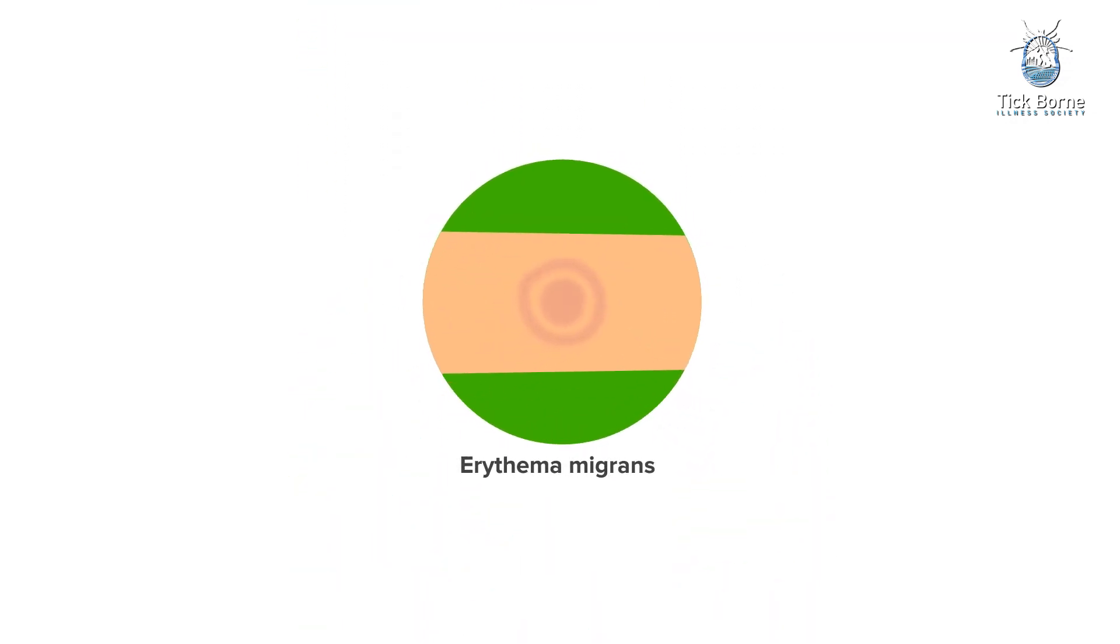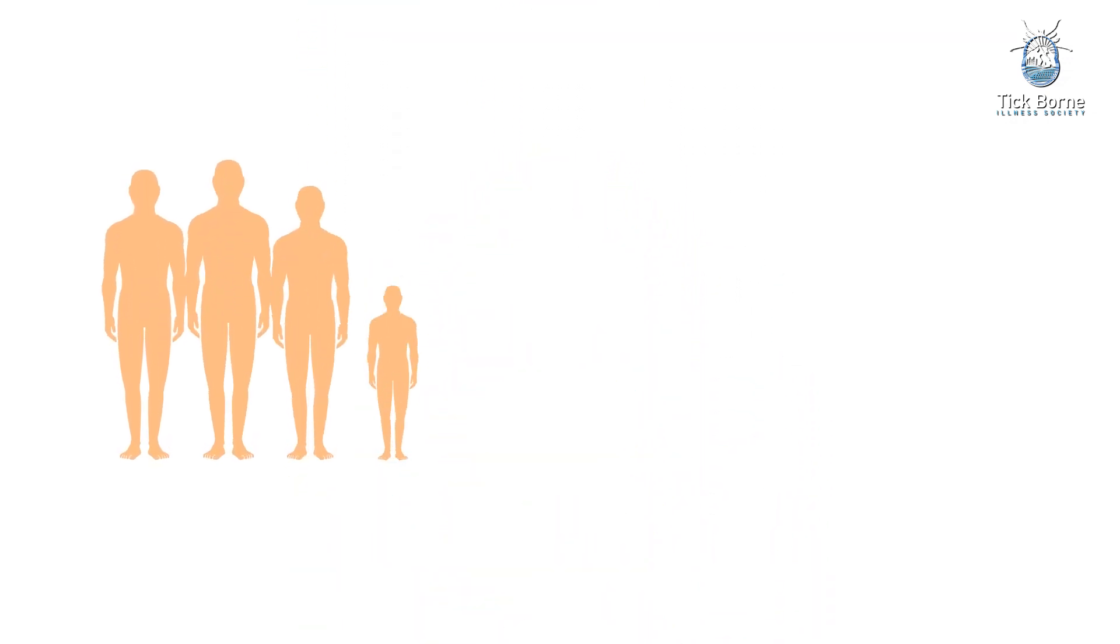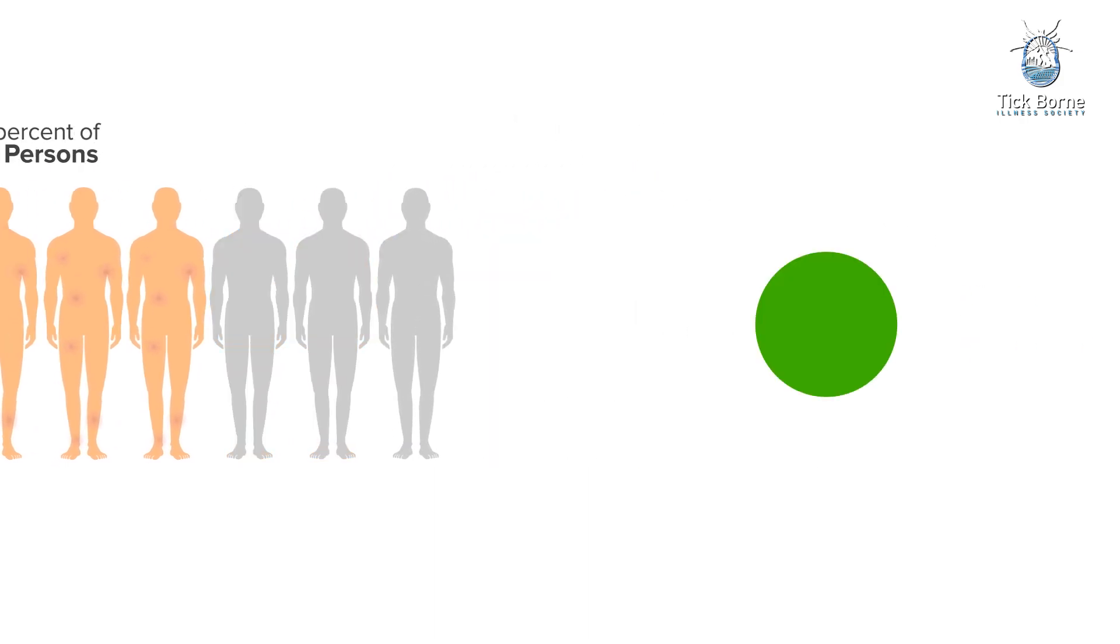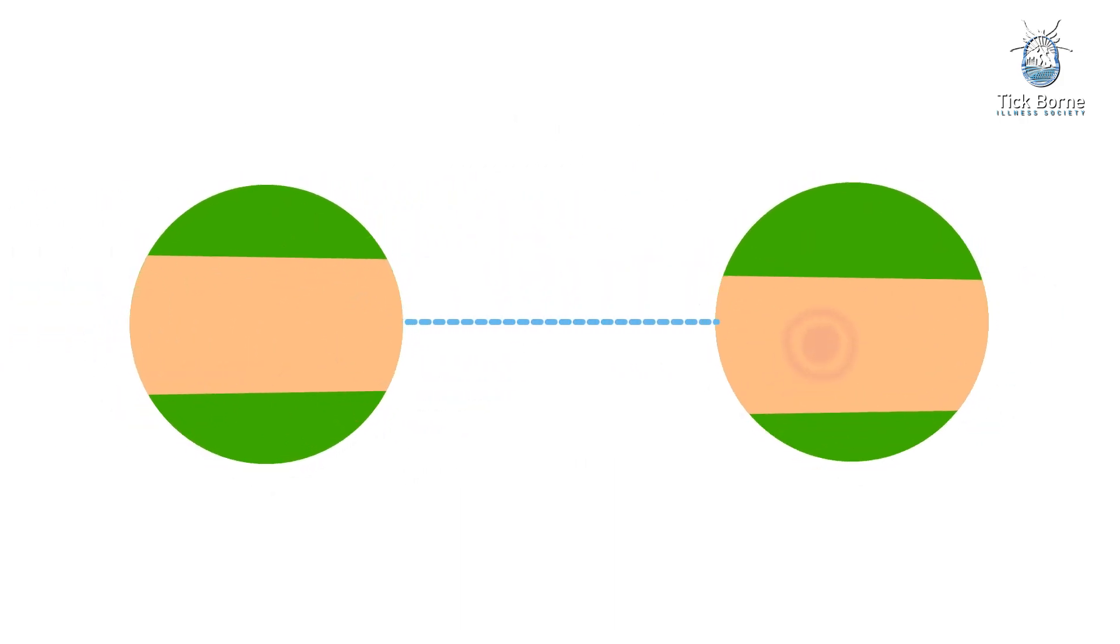Erythema migrans (EM) rash occurs in approximately 70 to 80 percent of infected persons. It begins at the site of a tick bite after a delay of 3 to 30 days, with an average of about 7 days. The rash expands gradually over several days, reaching up to 12 inches or more across.